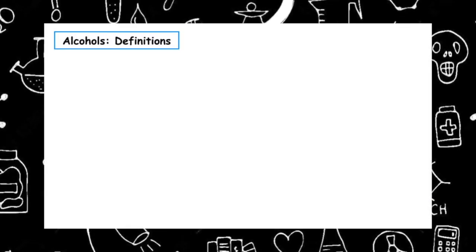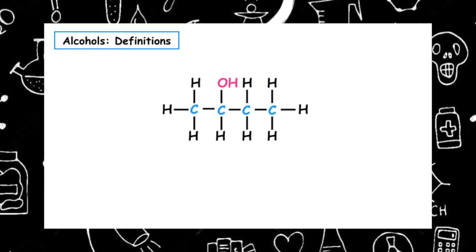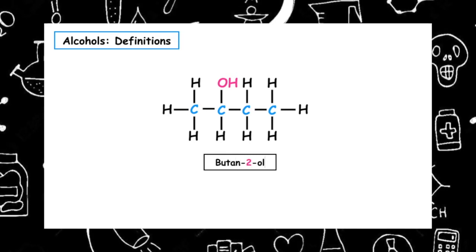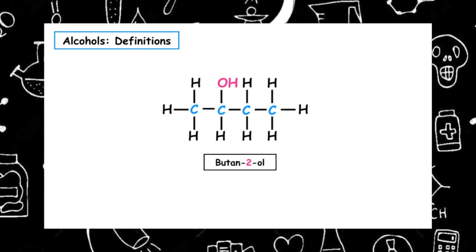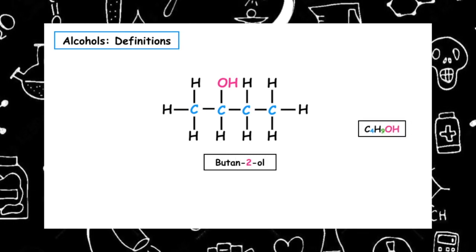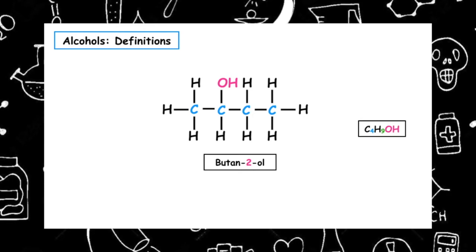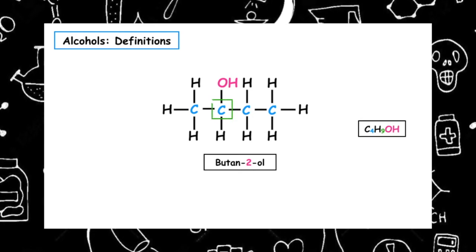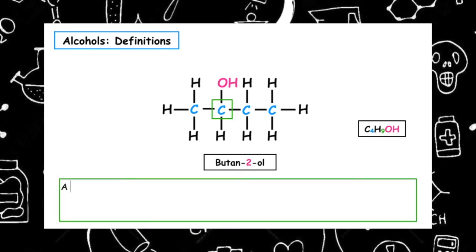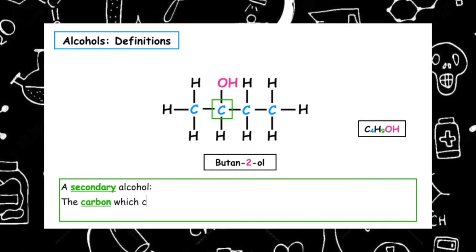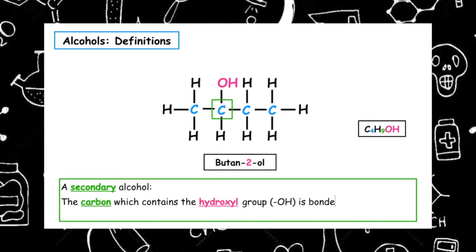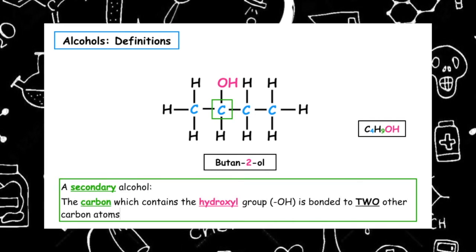So let's look at an isomer of butan-1-ol, which is butan-2-ol. Because it's an isomer, it has the same molecular formula C4H9OH — all we've done is change the position of the hydroxyl group. For a secondary alcohol, the carbon which contains the hydroxyl group is bonded to two other carbon atoms.